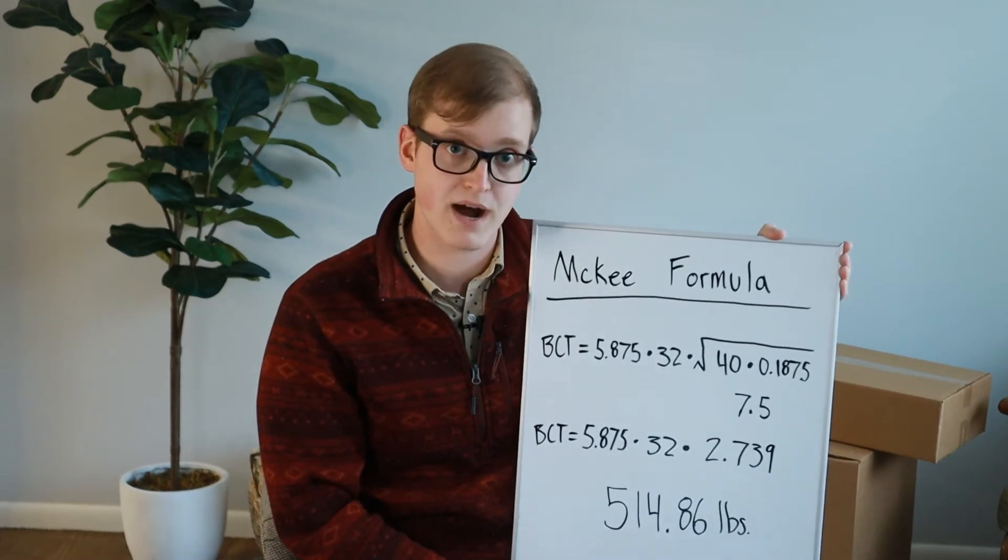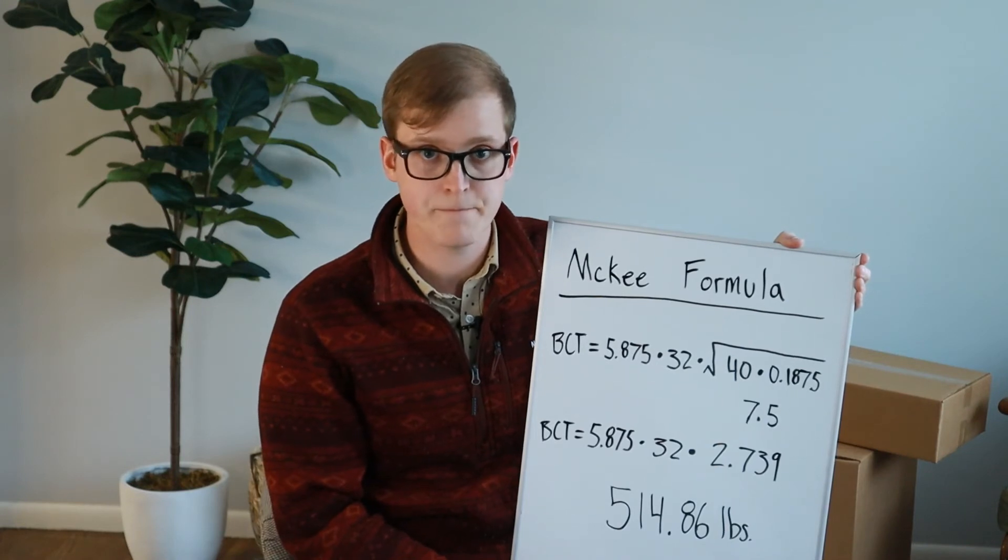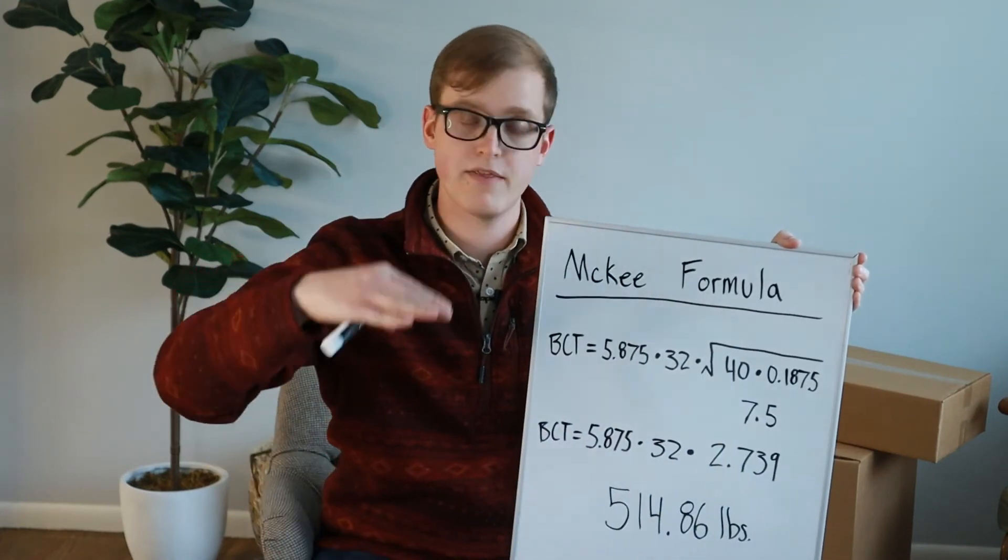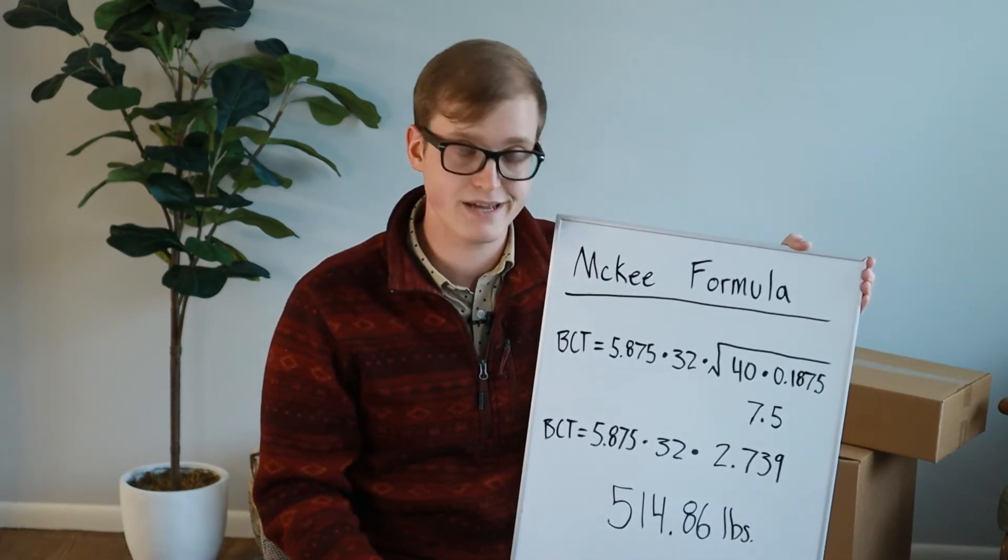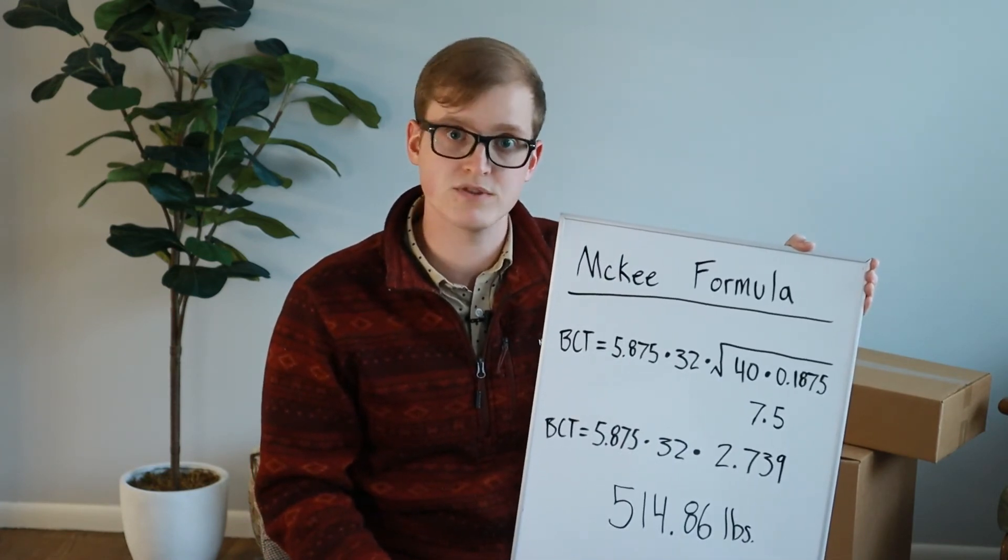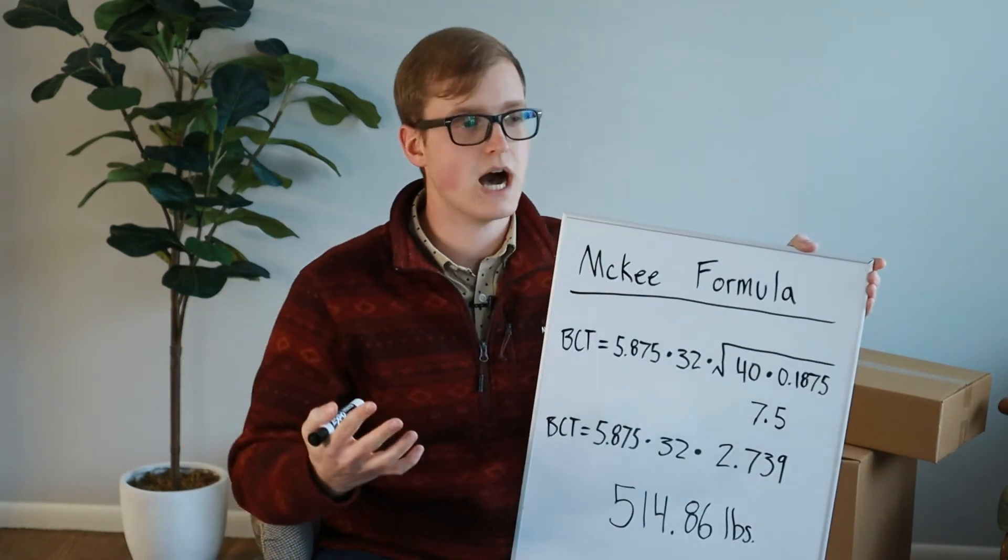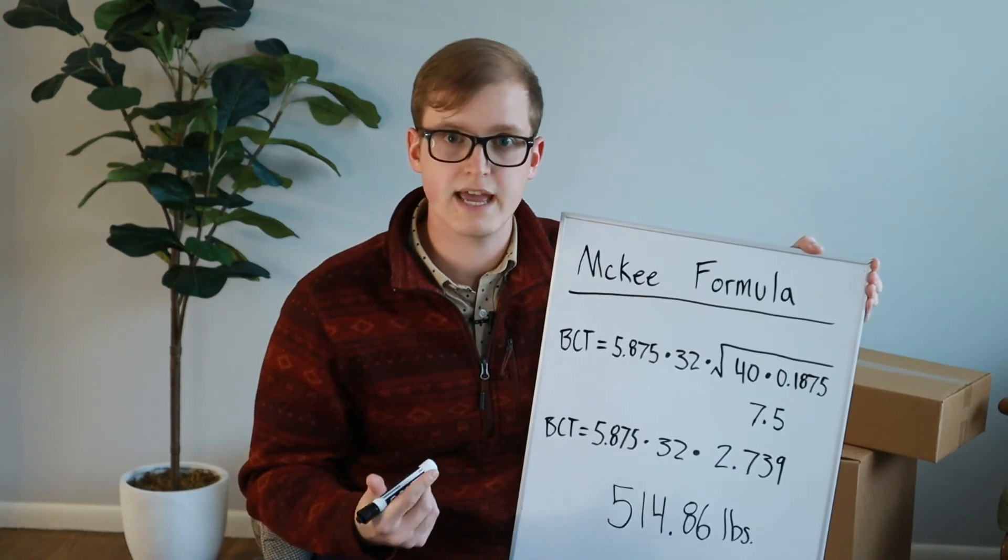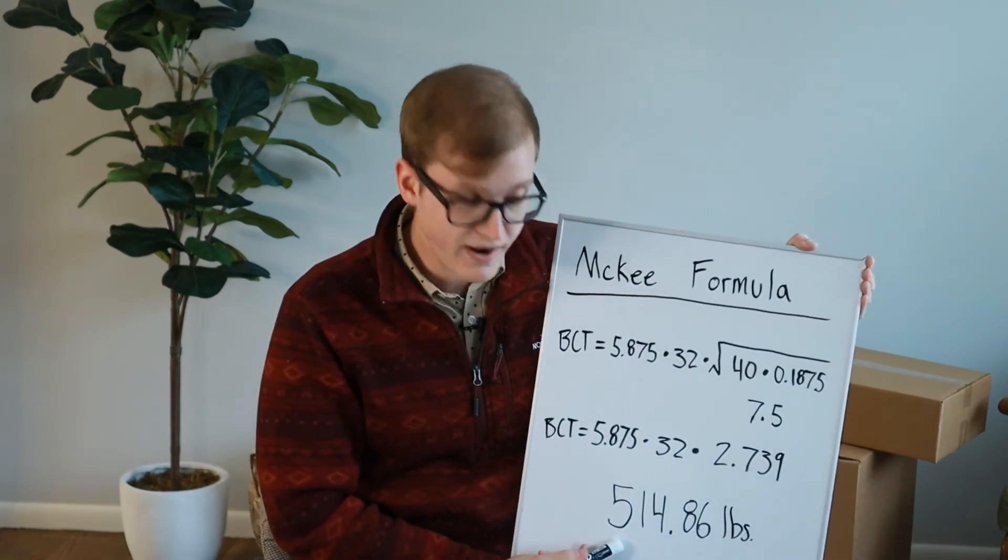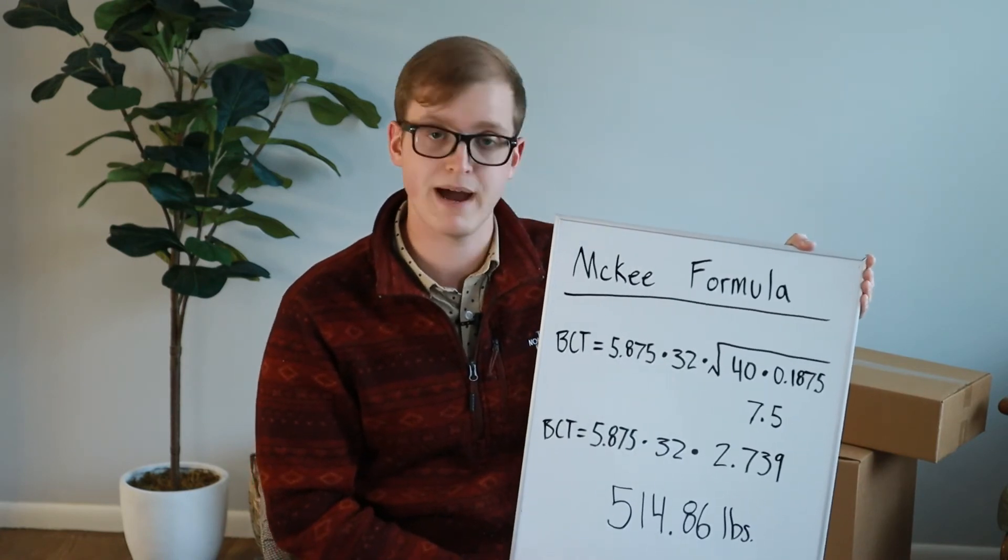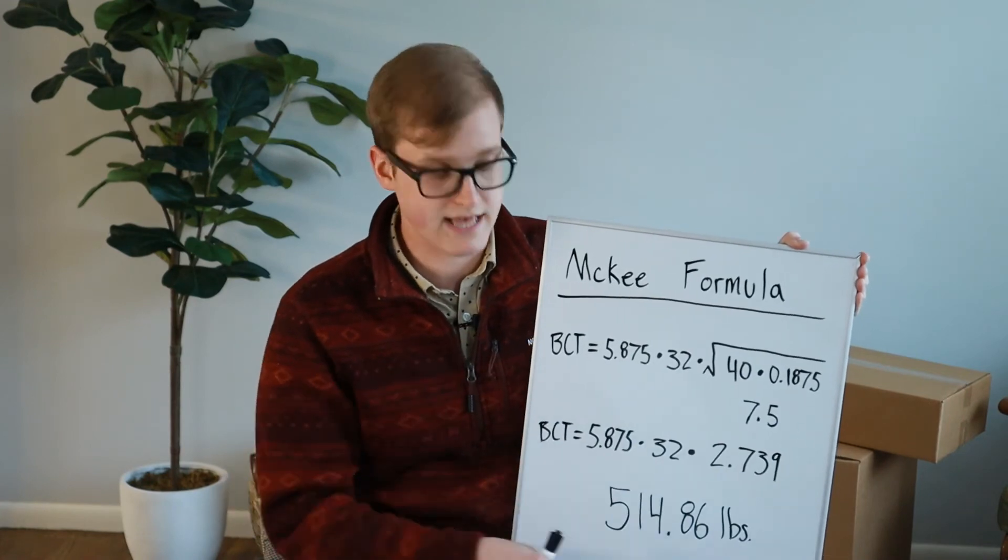And we punch all those in and we get the final value of 514.86. Now this number is how much weight our box, which was 10 by 10, C-flute 32 ECT, can handle from on the top of it. So as you can see, that's a pretty big number. And when it comes to pounds, so this again, if it's on a pallet or on something where maybe it's on the delivery truck and something's going to be stacked on top of it, our box can withstand 514 pounds. And for me and my applications, that is plenty.